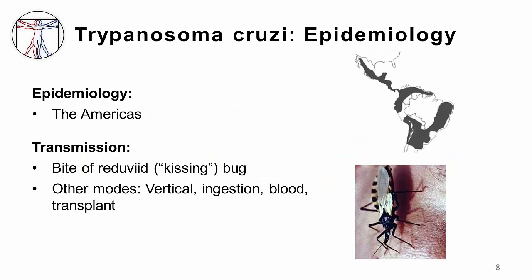T. cruzi causes Chagas disease, also known as American trypanosomiasis. This disease occurs primarily in rural Central and South America. We need to know about this disease in the US and the rest of the world because of immigration patterns. I myself have seen several cases in the last few years in my own practice. There are many advanced heart disease patients, for example, who have chronic Chagas disease and are candidates for transplantation.